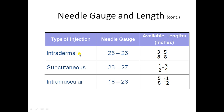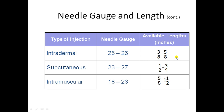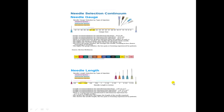For needle length by injection type: intradermal injections use 25–26 gauge needles with a length of 3/8 to 5/8 inches. Subcutaneous injections use 22–27 gauge needles with a length of 1/2 to 3/4 inches. Intramuscular injections use 18–23 gauge needles with a length of 5/8 to 1.5 inches.